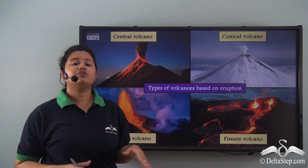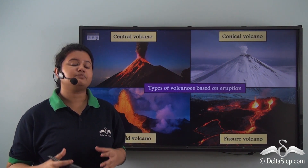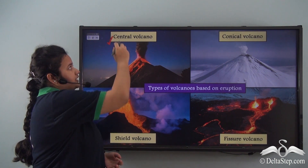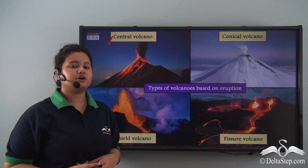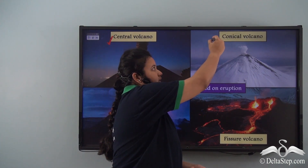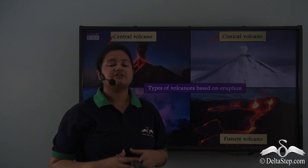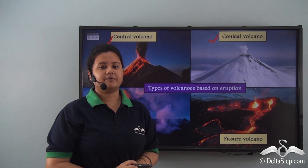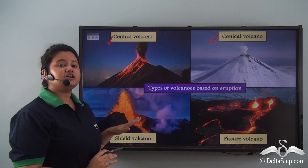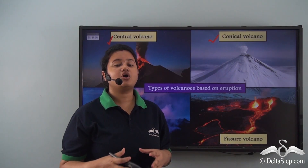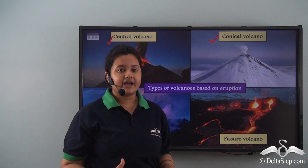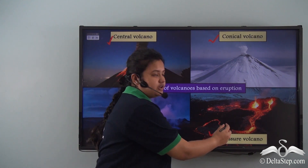To summarize the types based on how a volcano erupts: in a central volcano, lava comes out through a single opening. In a conical volcano, lava is viscous and forms a cone shape. If lava is less viscous and more fluid, a shield volcano is formed. When eruptions occur at intervals and materials come out through multiple cracks, it is a fissure volcano.